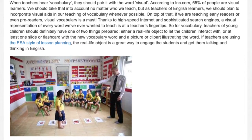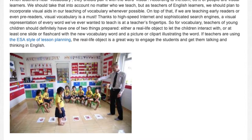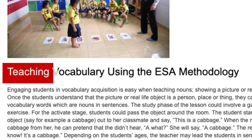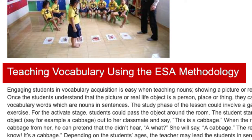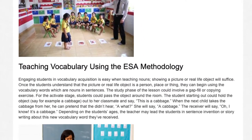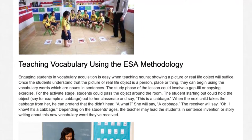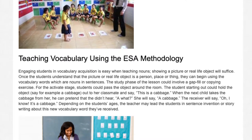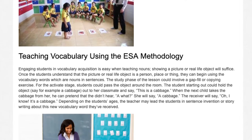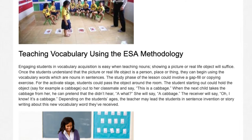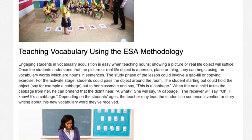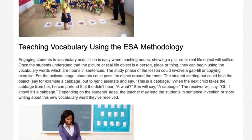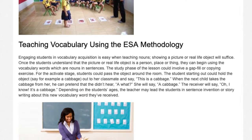If teachers are using the ESO style of lesson planning, the real-life object is a great way to engage students and get them talking and thinking in English. Engaging students in vocabulary acquisition is easy when teaching nouns — showing a picture or real-life object will suffice. Once the students understand that the picture or real-life object is a person, place, or thing, they can begin using the vocabulary words in sentences.